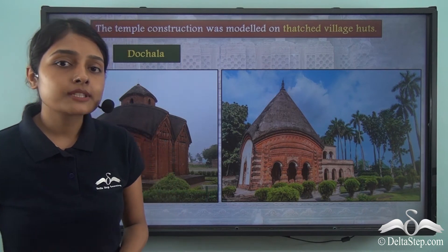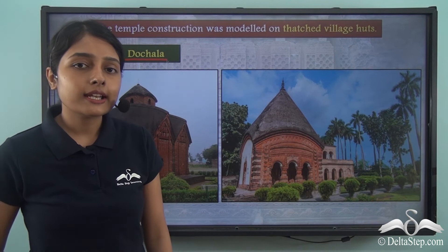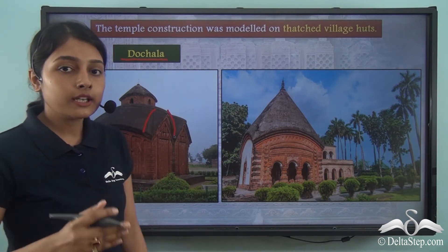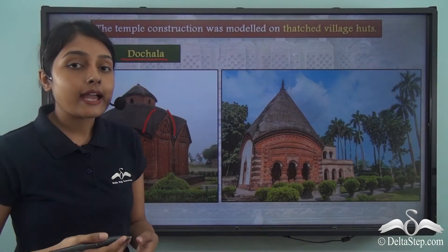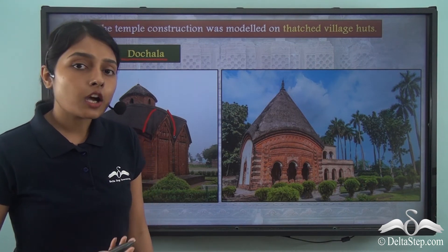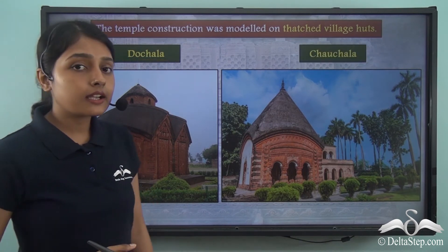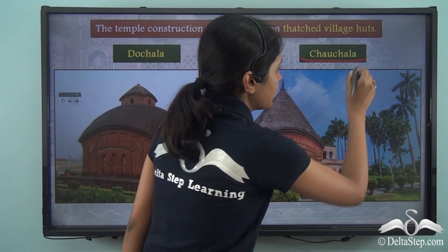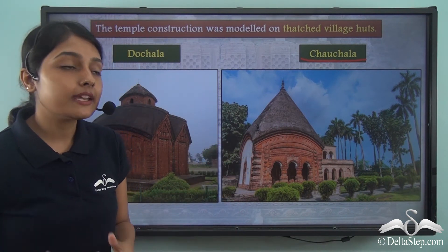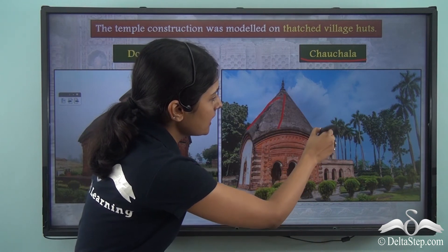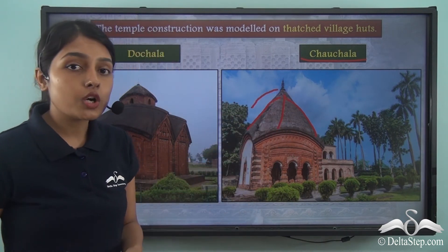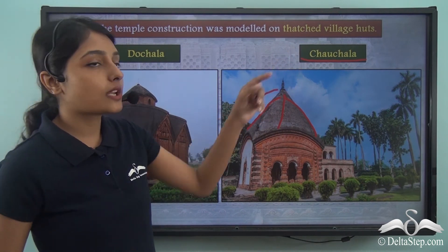Firstly, some temples were Dochala. The Dochala temples had two roofs placed adjacent to each other. Along with the Dochala temples, another kind of temple was made which was known as the Chao Chala. Now as the name suggests, Chao means four, so these Chao Chala temples were made of four walls — here is one wall, here is another, and at the back would be the fourth wall. So there were four walls on these temples, which is why they came to be known as the Chao Chala temples.